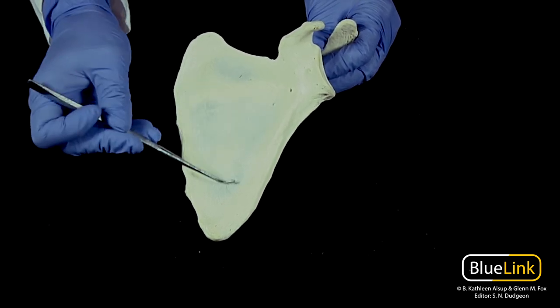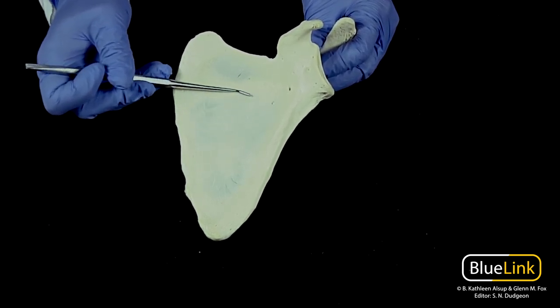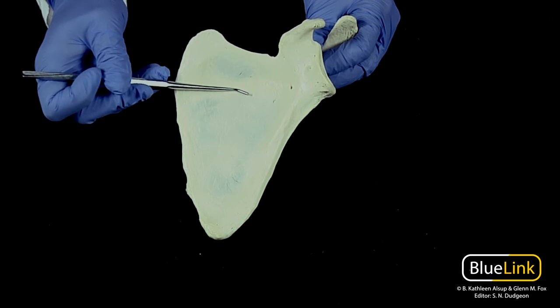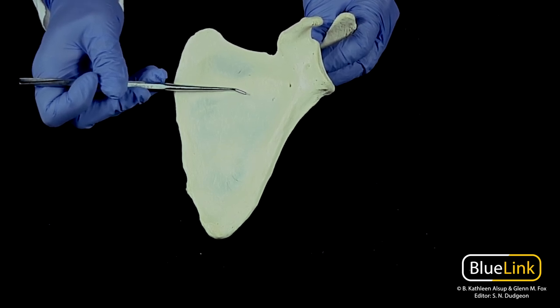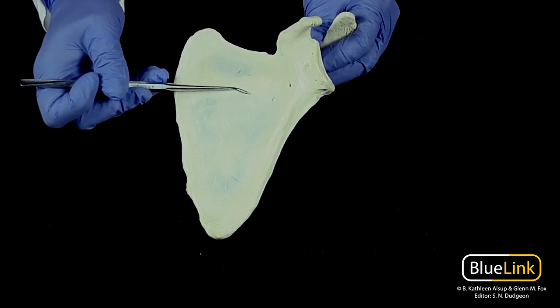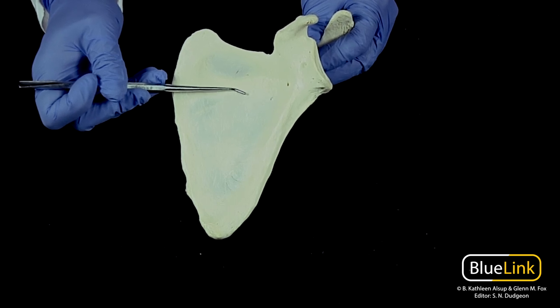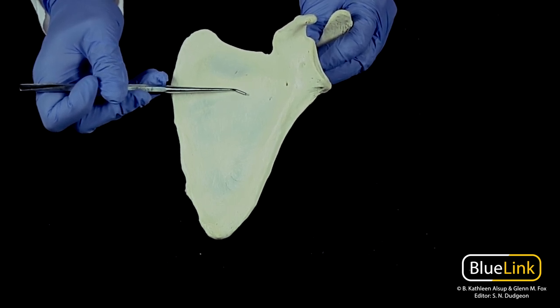When you're looking at the anterior view, you'll see another distinct fossa. This is referred to as the subscapular fossa, and your subscapularis muscle is going to originate here. Another rotator cuff muscle.